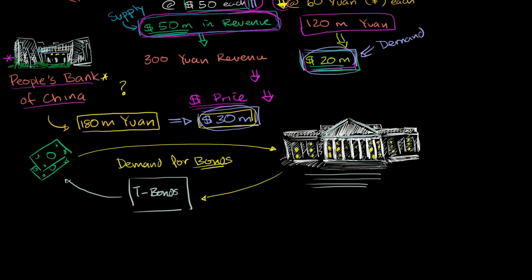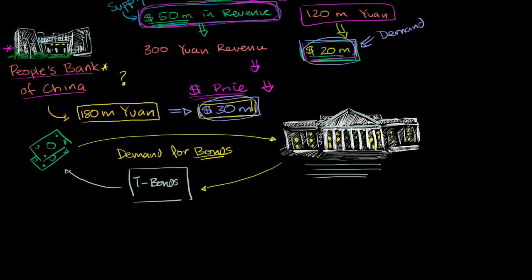Now what does that do? Well, if you're increasing the demand for anything, that's also going to increase the price. So the price of treasury bonds, of T-bills and T-notes, goes up. T-bills are durations less than one year. Notes are durations more than a year. So the price goes up.